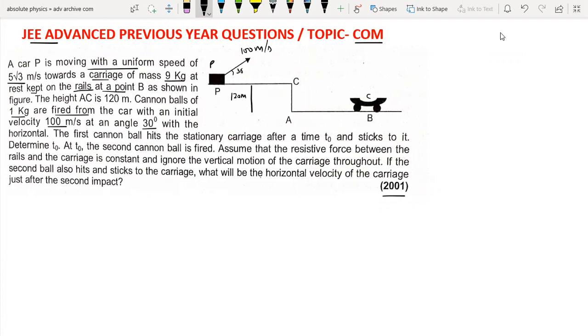The first cannon ball hits the stationary carriage after time T0, and we need to determine T0. First we will find how much the cannon ball will reach. The ball has horizontal velocity component 100 cos 30, which is equal to 50√3.